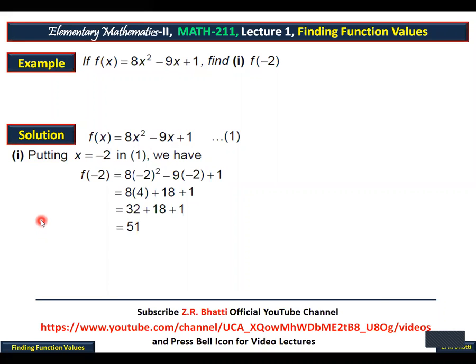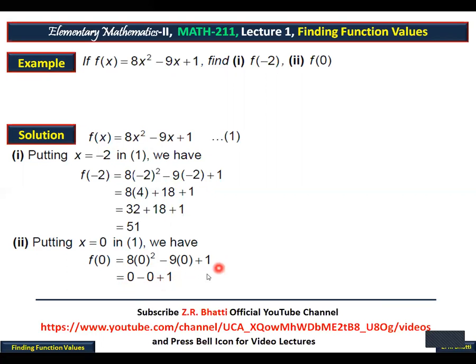Now to understand it further, we also do part (ii): find f(0). Before we found f(-2), now what do we find? Second part: f(0). How will we find it? Where we put x = -2 before, now put 0. Then see what result comes. Putting x = 0 in equation number 1, that same formula. Put x = 0. In place of x, 0. 8 times 0² minus 9 times 0 plus 1. 0 times anything is 0, 9 times 0 is 0, plus 1 equals 1.